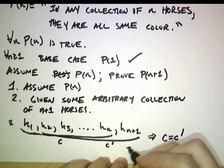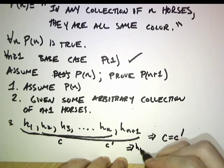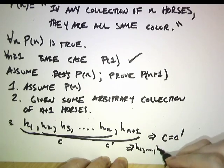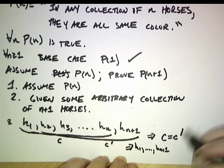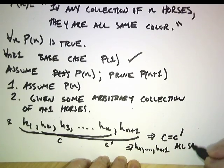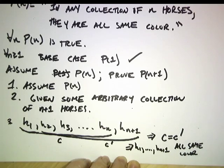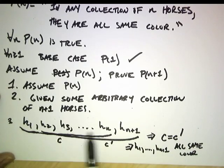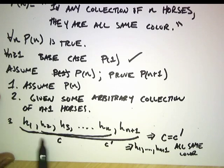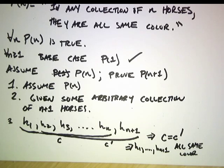Since c equals c', this implies that h1 through hn+1 are all the same color. So we've proved that every horse has the same color. I'll tell you in class where the mistake is.